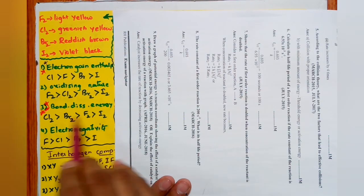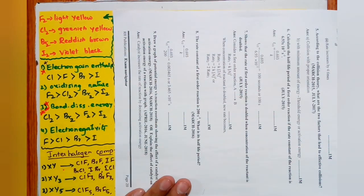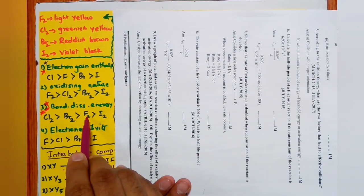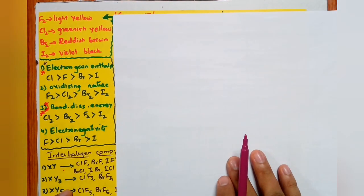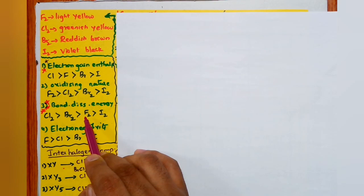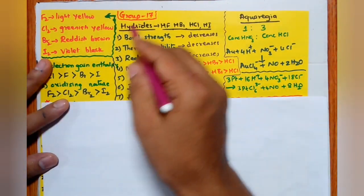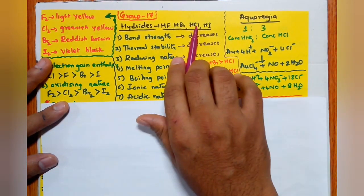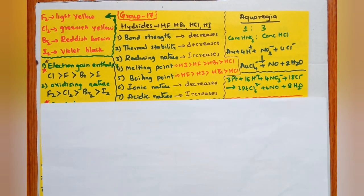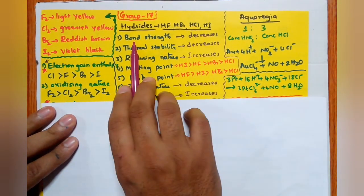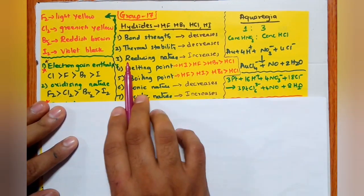F2 is the strongest oxidizing agent; I2 is the weakest, meaning I2 has the best reducing nature. Bond dissociation energy order (exceptional): Cl2 > Br2 > F2 > I2. F2 is expected to be highest but has lower bond dissociation energy due to inter-electronic repulsion from its small size. Electronegativity order: F > Cl > Br > I.